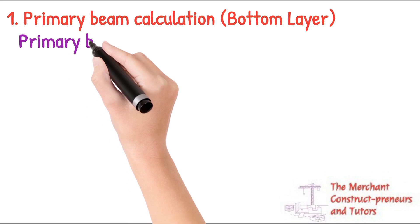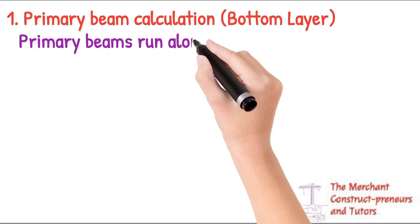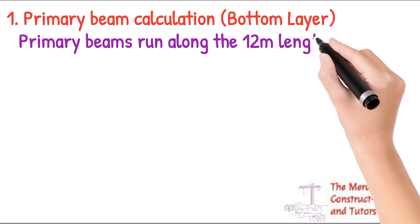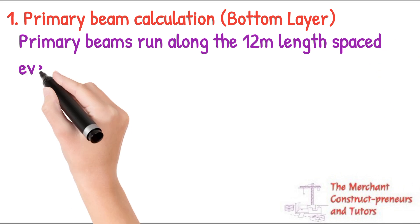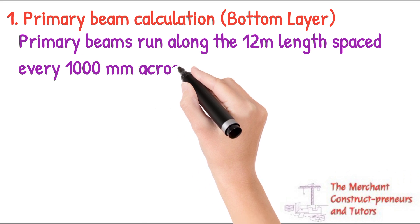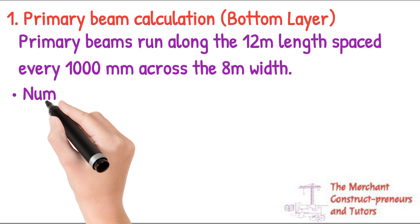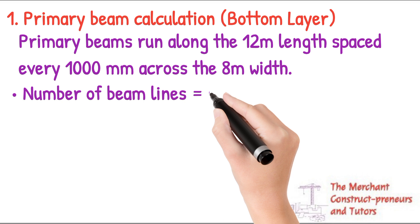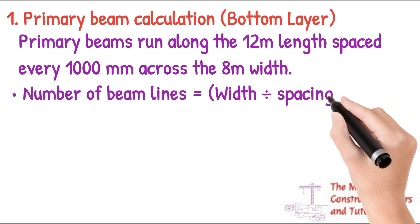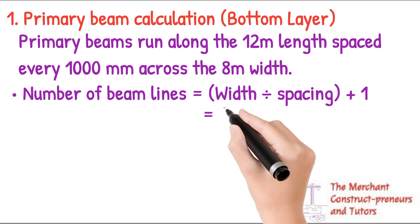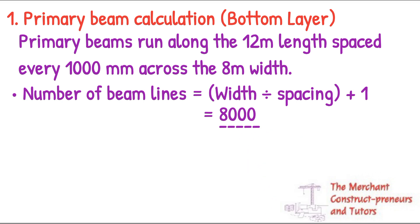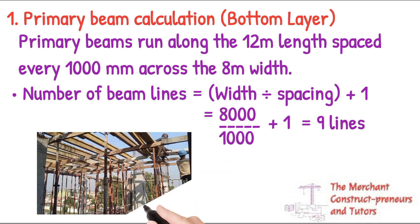We will start with the primary beam calculation — that is the bottom layer, which runs along the 12-meter length, spaced every 1,000 millimeters, that is 1 meter. The number of beam lines is given by width divided by spacing, plus 1. So the width is 8 meters divided by 1 meter spacing, plus 1, giving us 9 lines.